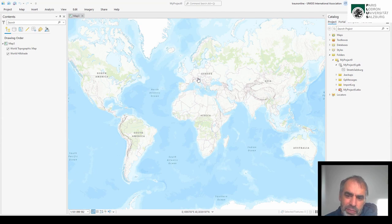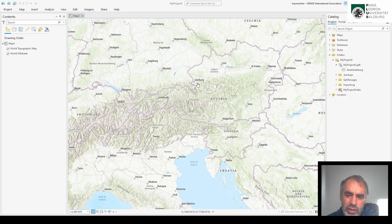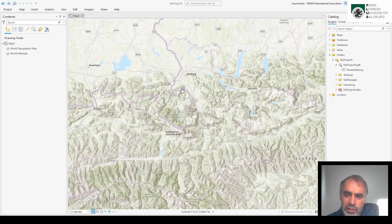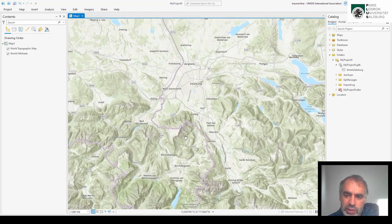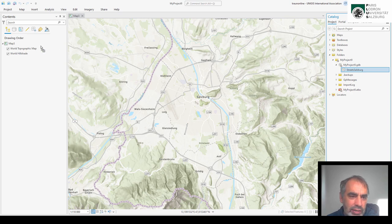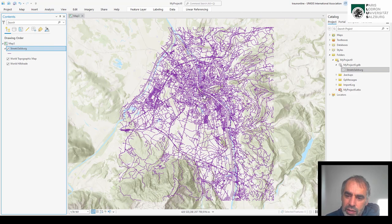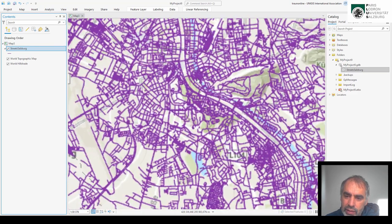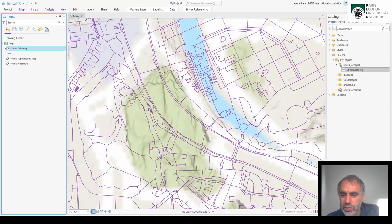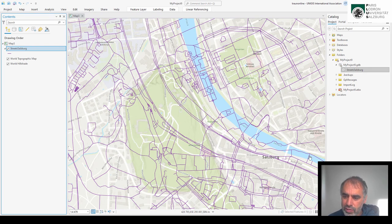Probably this is familiar to you. You open a new map, zoom to the area of interest, for example here we are in the city of Salzburg. Then you add some data, some local street network to your map, and oops you see there is a problem with the alignment.